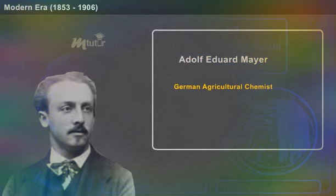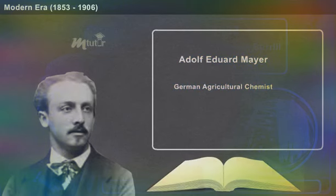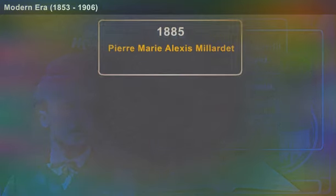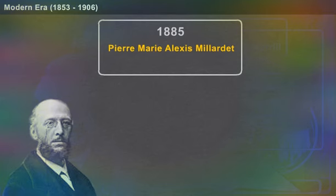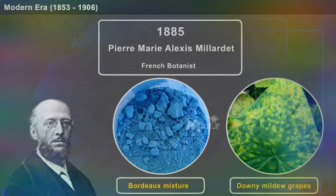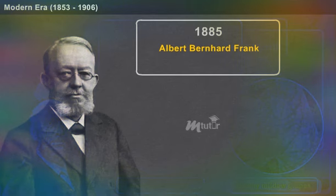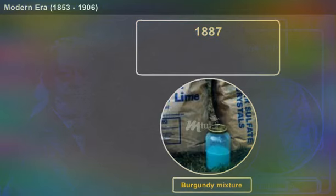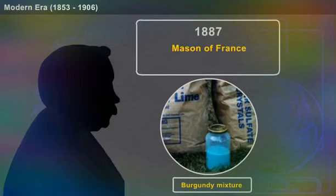Adolf Edward Mayer, a German agricultural chemist, was the first to study the tobacco mosaic virus in 1886. In 1885, Pierre-Marie Alexis Millardet, a French botanist, accidentally discovered the Bordeaux mixture that controlled downy mildew in grapevine. Albert Bernhard Frank, a German botanist, defined and named mycorrhiza in plant roots the same year. In 1887, Burgundy mixture was introduced to control fungal diseases by Mason of France.